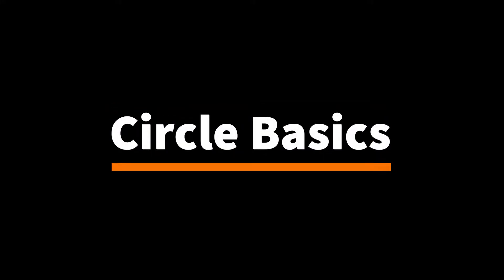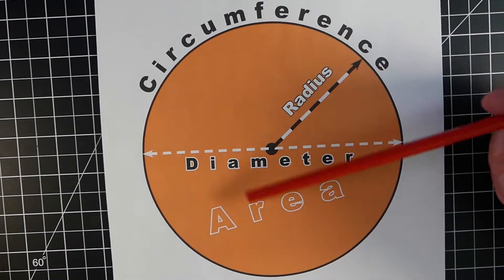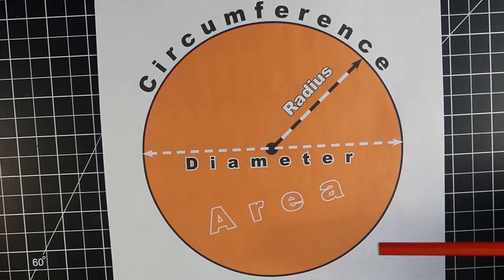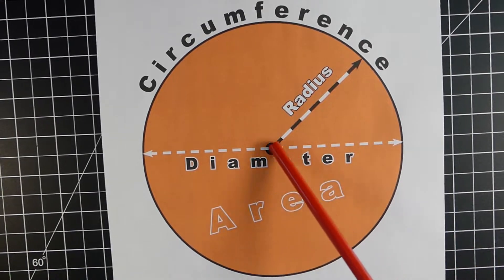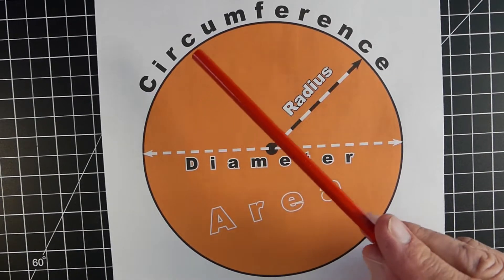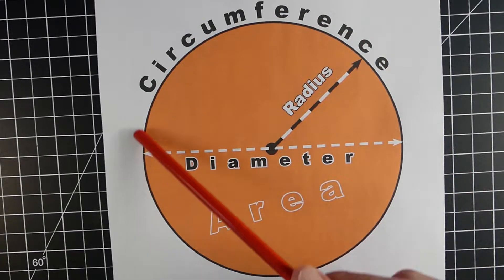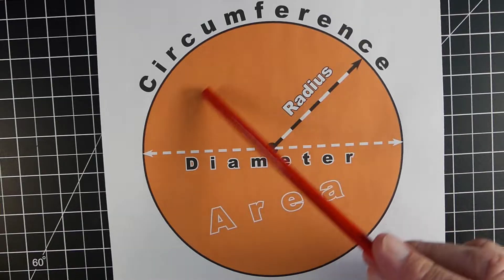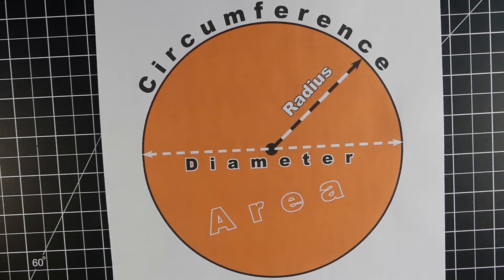Let's look at some of the basics of circles. There's some key terminology we need to know. The line from the center of the circle to the edge is referred to as the radius. The distance all the way across the circle through the center is called the diameter. The distance all the way around the circle is referred to as the circumference. And the area is everything inside of the circle — all the orange stuff in this example would be the area.